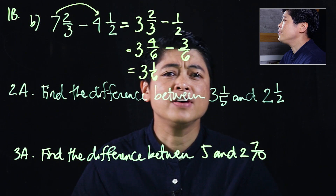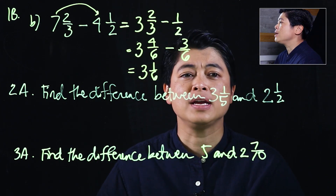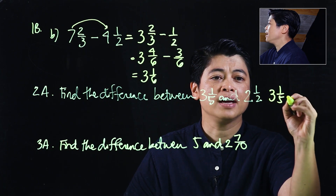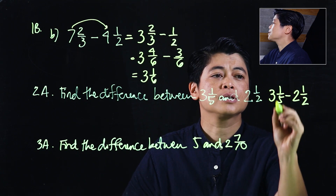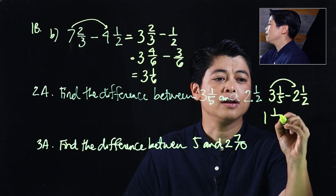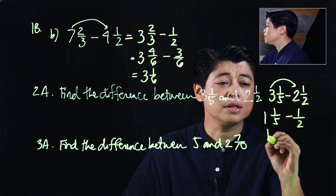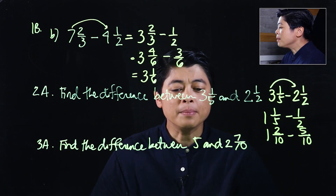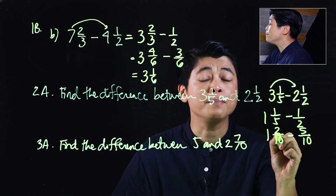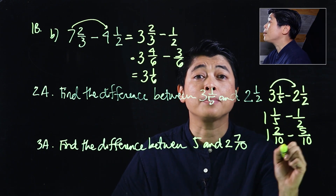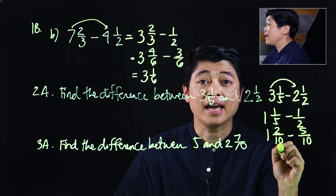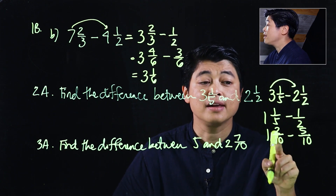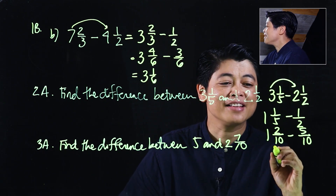For 2a, find the difference between 3 and 1 fifth and 2 and 1 half. This becomes 3 and 1 fifth minus 2 and 1 half. Taking the difference gives 1 and 1 fifth minus 1 half, which will be over 10 — giving us 2 over 10 minus 5 over 10. Since we can't take 5 from 2, we convert to an improper fraction: 12 over 10 minus 5 over 10 equals 7 over 10.